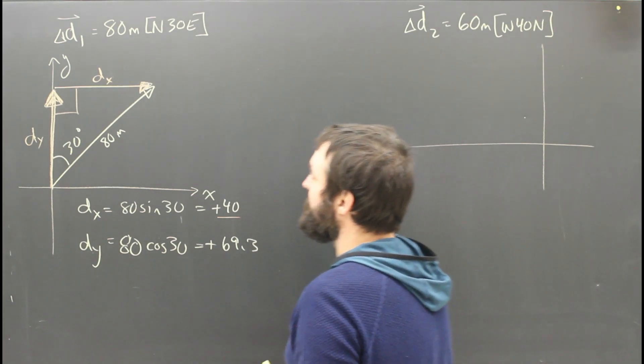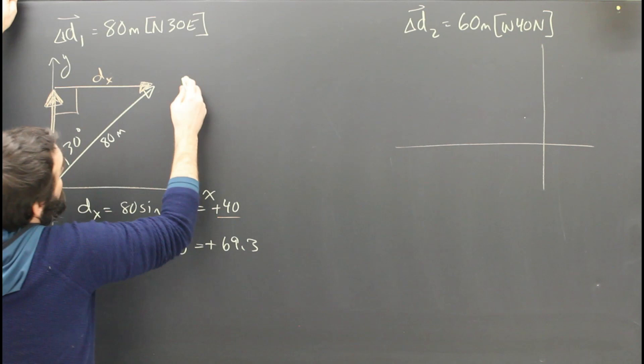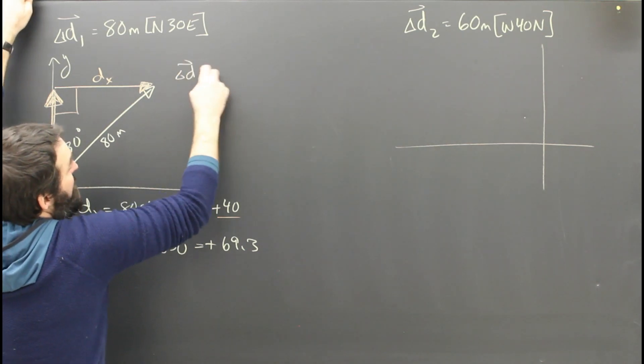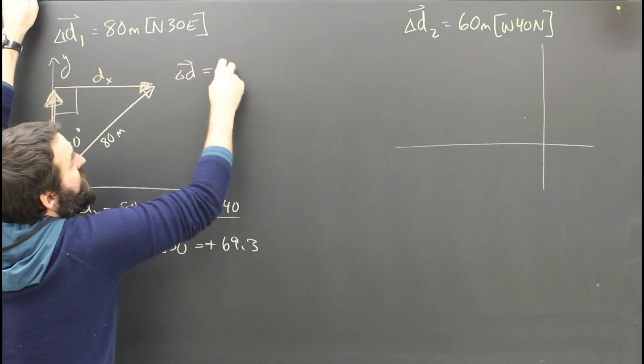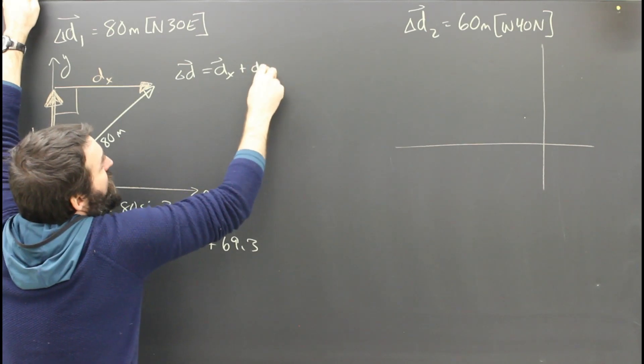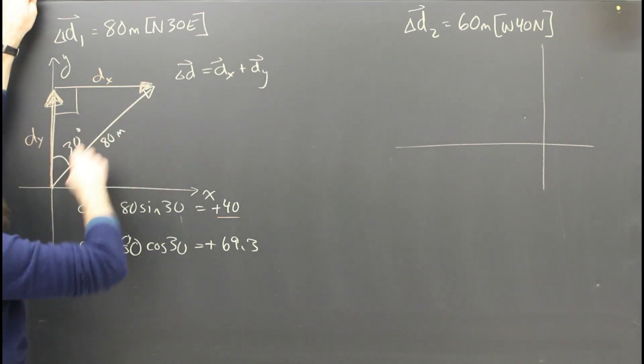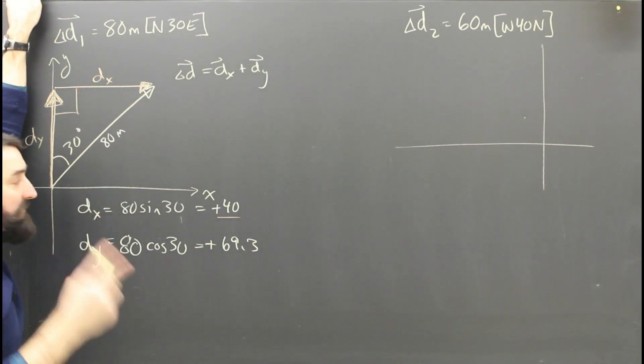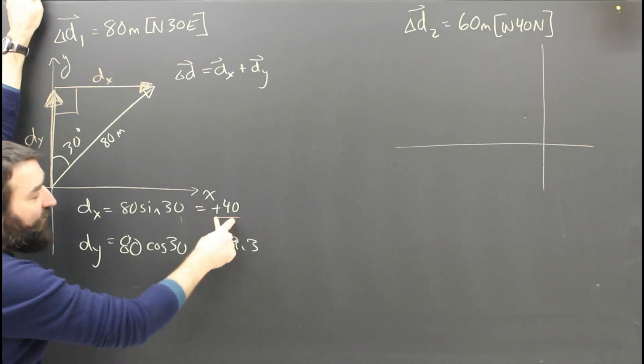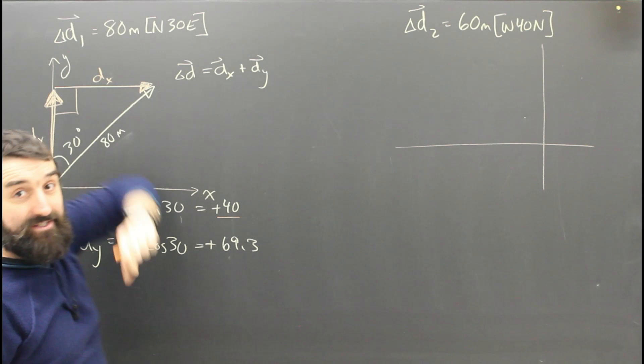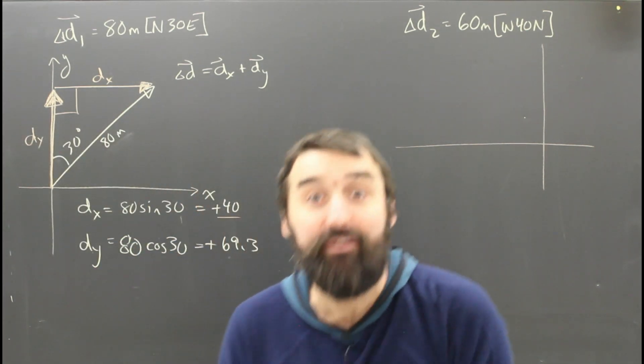And let's just double check our answer here, because we said the other day that components add up to the original vector. So dx plus dy better give me the original vector. Some of you might look at this and say, no way, 40 plus 69 is not equal to 80. To which of course I would say, do you remember how to add vectors?